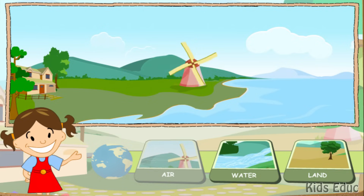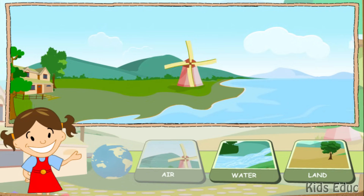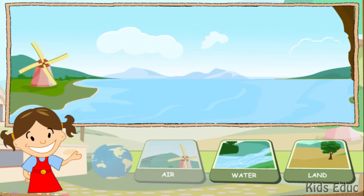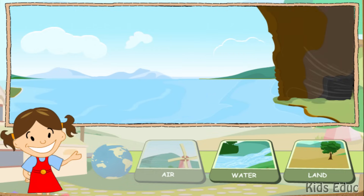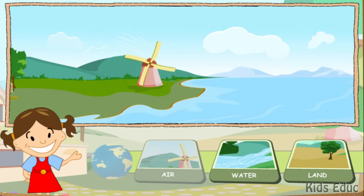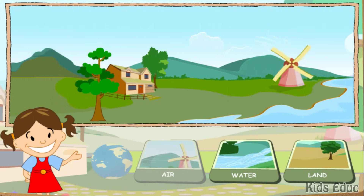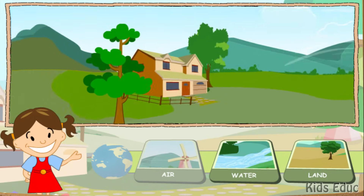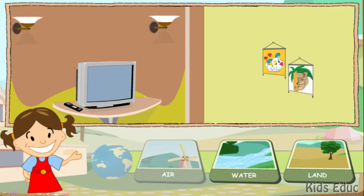Air surrounds the entire planet — it's everywhere. It's in the mountains, it's far out on the ocean, and even underground in caves. The main resource in air is oxygen. We need oxygen to breathe and to stay alive. But we also use air to turn windmills, which makes electricity. We use electricity to light our homes and run things like TVs and video games.